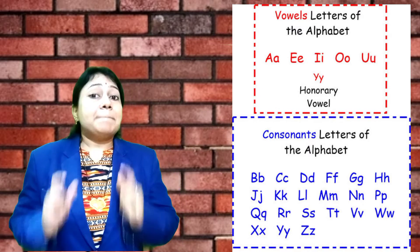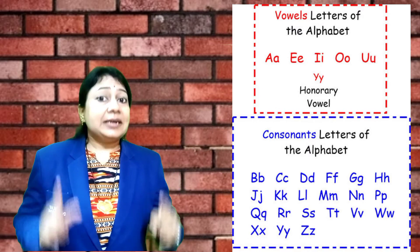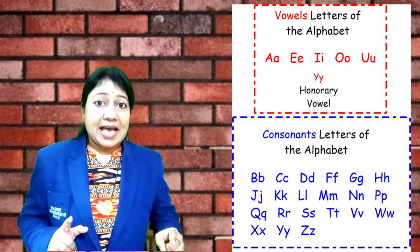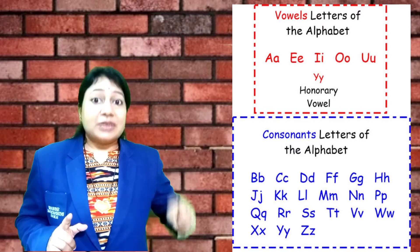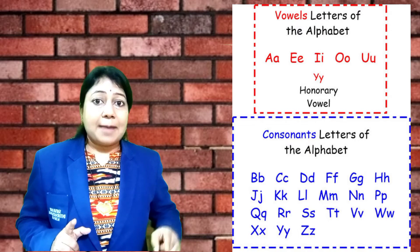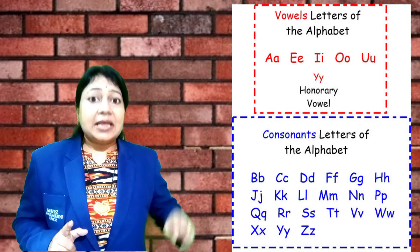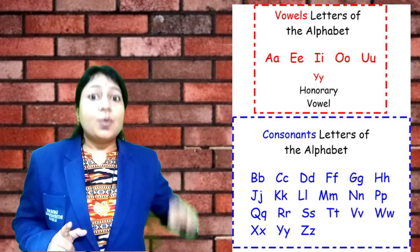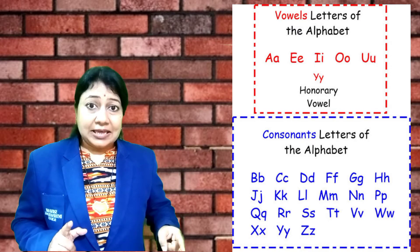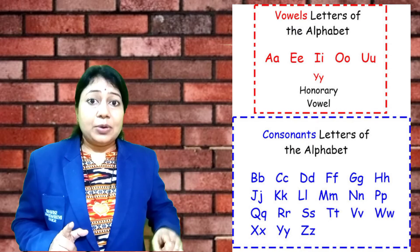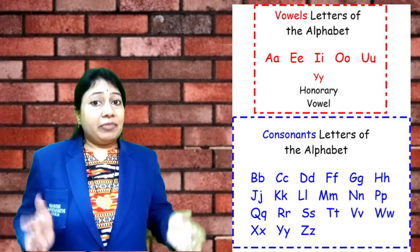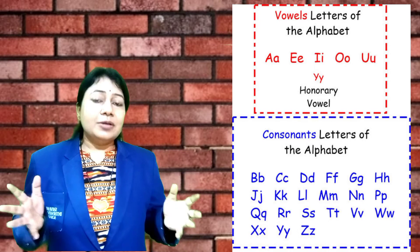The consonants are: B, C, D, F, G, H, J, K, L, M, N, P, Q, R, S, T, V, W, X, Y, and Z. These are called consonants.